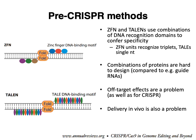Just as with CRISPR, some of the other problems with zinc fingers and TALENs are that it's sometimes hard to predict off-target effects because of a lack of precise sequence specificity.